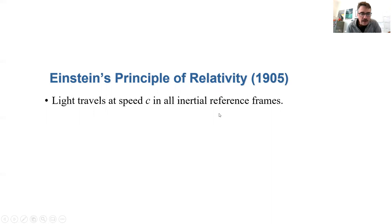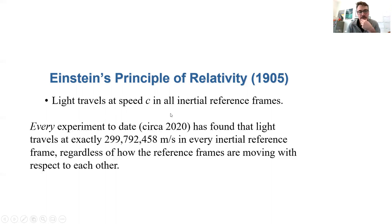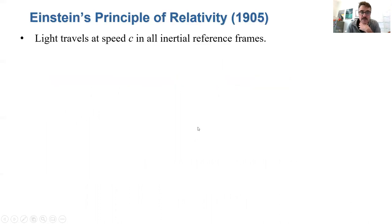So here we are. And this is the basis of relativity. Light travels at speed c in all inertial reference frames. That's the basic idea. And it's true. Every experiment to date, even up to 2020 has found that light travels at exactly this speed in every inertial reference frame, regardless of how reference frames are moving with respect to each other. There are some consequences of this.